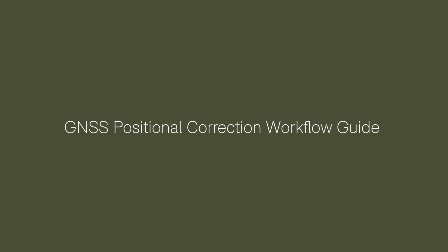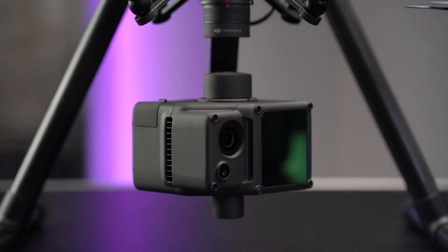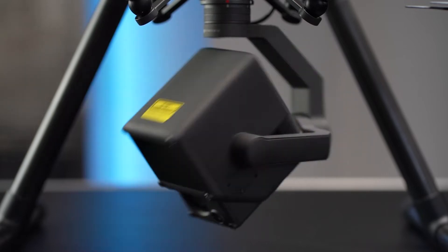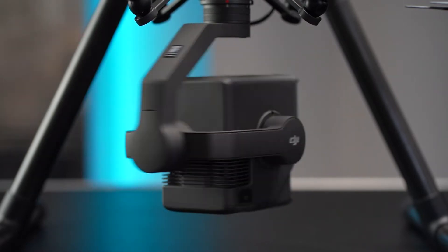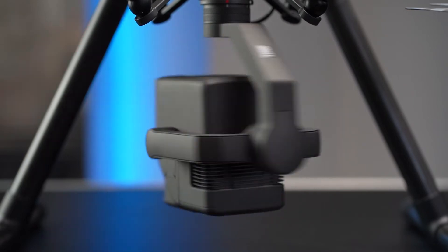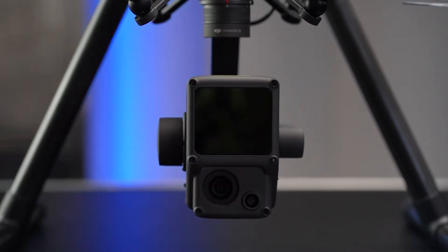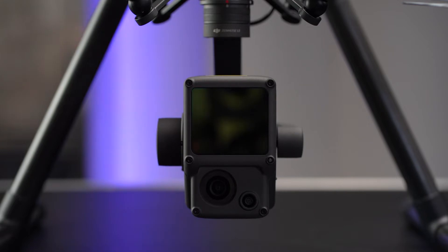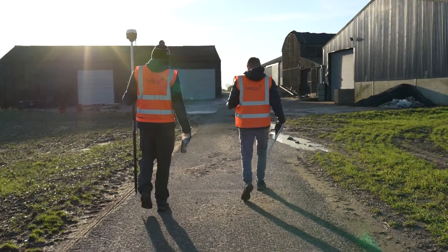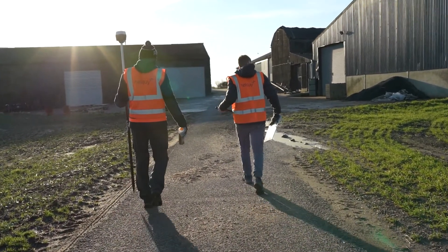Welcome to the second module of your XEMUS L1 training course. This lesson is designed to introduce you to everything there is to know about generating and applying highly accurate GNSS positional corrections into your L1 data set. The XEMUS L1 has been designed around the application of Cervain, therefore applying a form of positional corrections to your data is fundamentally essential. Without the application of such corrections, your data will not process in DJI Terra.